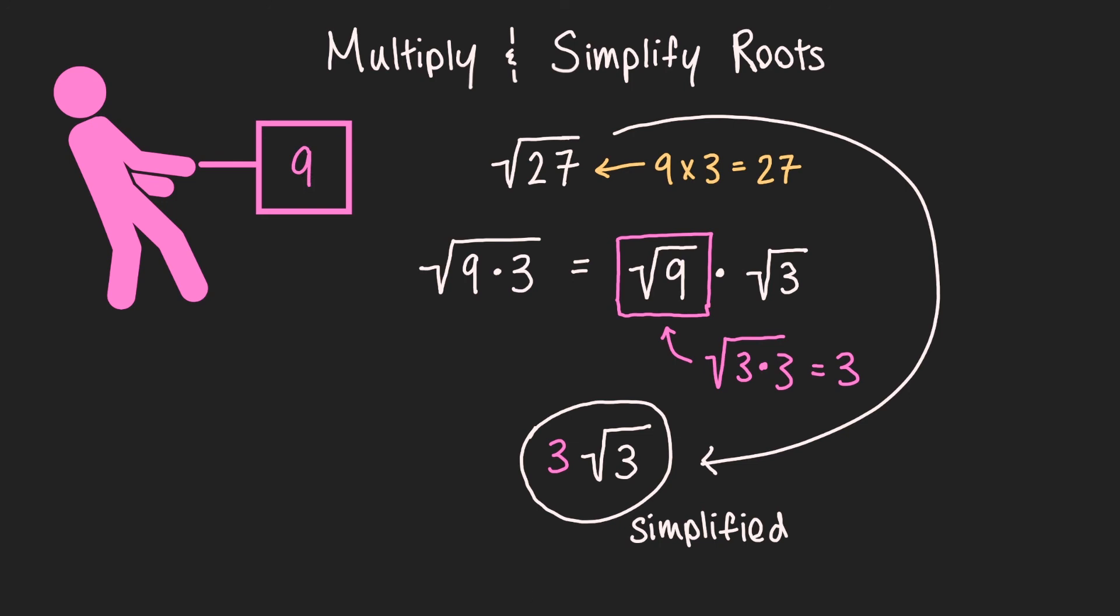So to summarize, whenever you simplify a root, first factor out your radicand, then multiply the roots out, and then pull out any perfect squares that you see.